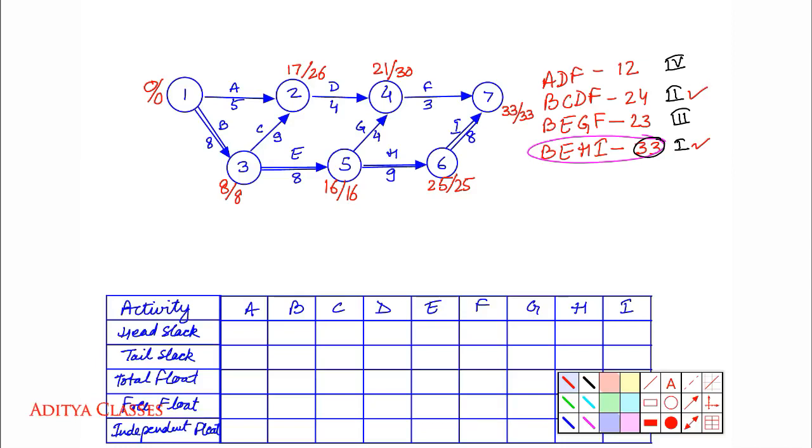Now let me see BEGF. We have B, E, G, and F. Forward pass: 0 and 8 is 8. 8 and 8 is 16. 16 and 4 is 20. Should I write 20? No, it will be 21 because we are in a forward pass. 21 and 3 is 24. Should I write 24? No, it will be 33. Let us jump to the backward pass: 33 minus 3 is 30. 30 minus 4 is 26. Should I write 26? No. In a backward pass, we write the smaller of the values. So we will leave it as 16. 16 minus 8 is 8 and 8 minus 8 is 0.